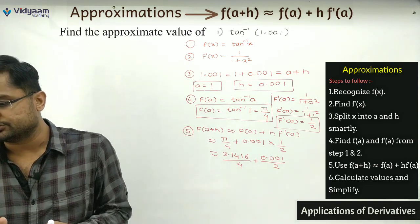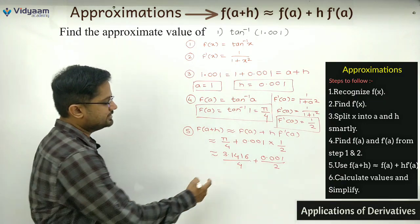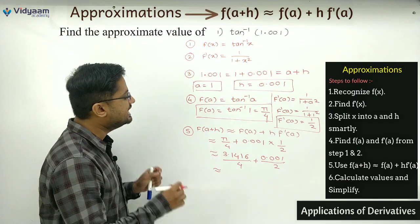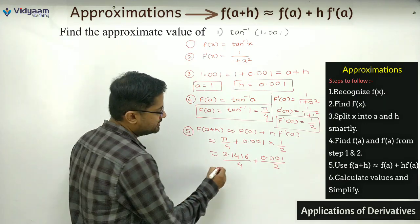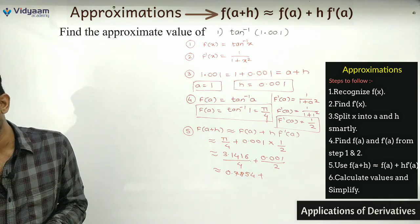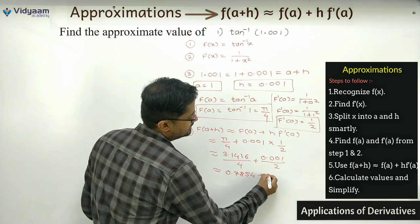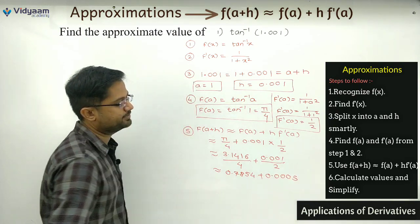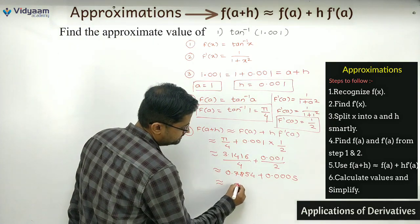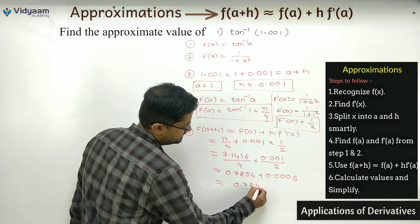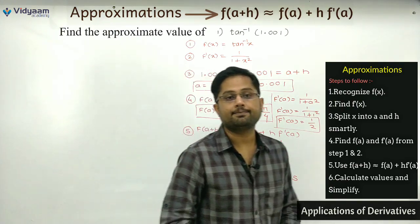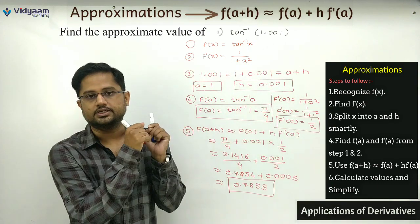Now just simplify these values. 3.1416 divided by 4 gives approximately 0.785..., and 0.001 by 2 gives 0.0005. Adding these together, the answer is approximately 0.7859. This is the approximate value for tan inverse of 1.001.